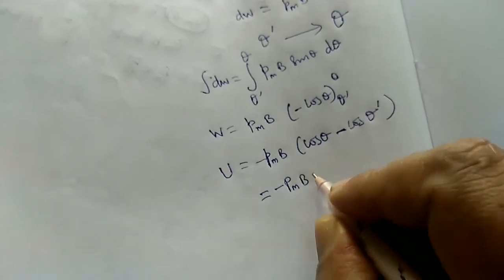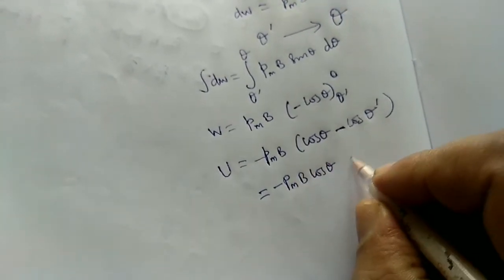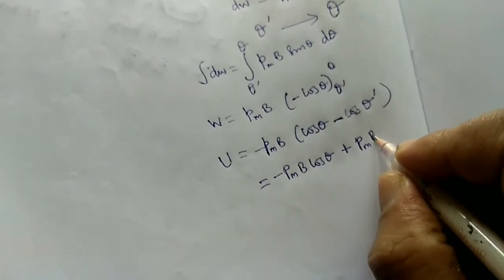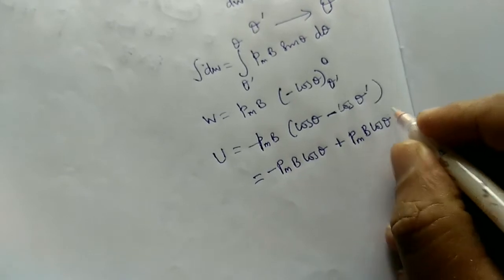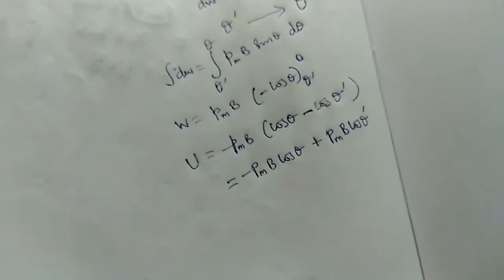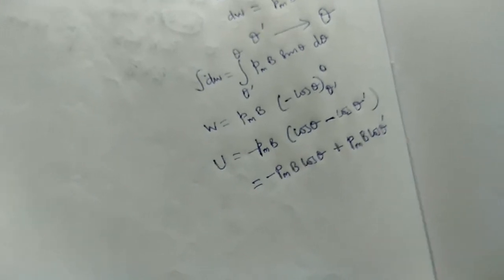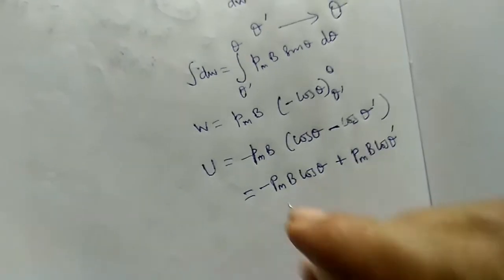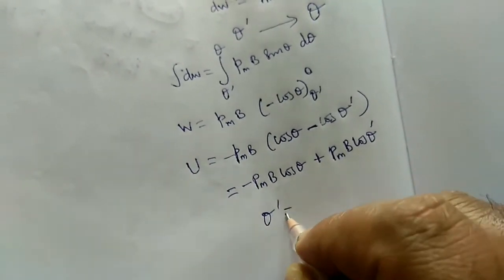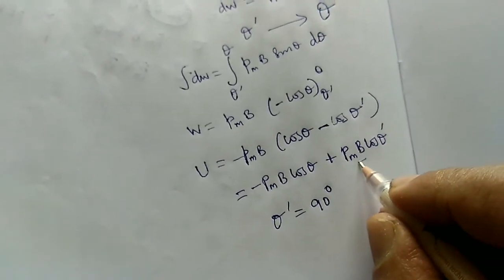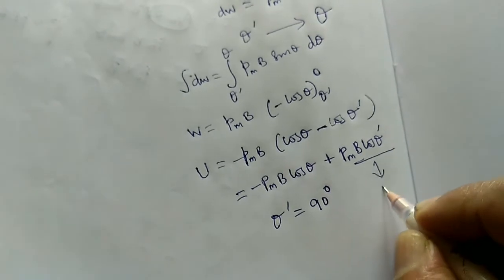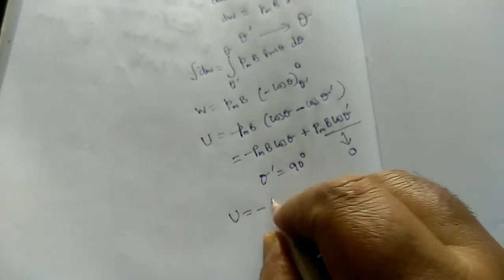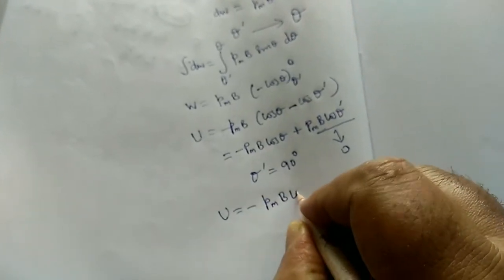The result is minus PmB cos theta, evaluated with theta dash as the initial angle. Suppose initially the dipole is taken perpendicular to the magnetic field, so the initial angle theta dash is 90 degrees. Cos 90 is 0, so that term becomes 0. Therefore, U equals minus PmB cos theta.